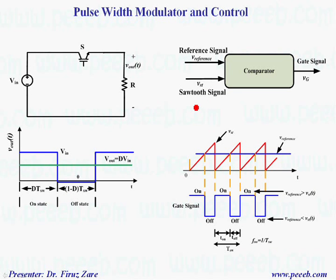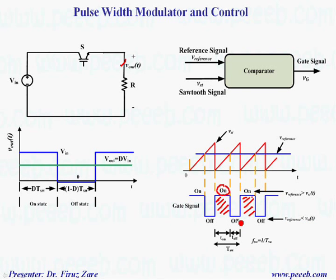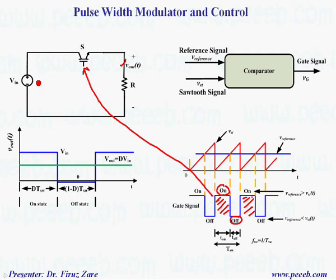In this section, we can see the pulse width modulator and the controller. Basically, to be able to control the output voltage, we need to change the duty cycle — that means the turn-on time and turn-off time should be controlled. A simple circuit diagram is shown here. We can have a sawtooth and then compare it with a DC voltage and finally get this pulse pattern. This pulse pattern can be applied to the power switches. Whenever the reference voltage is greater than the sawtooth, the switch should be on. We can then apply this signal to the power switch and change the output voltage.